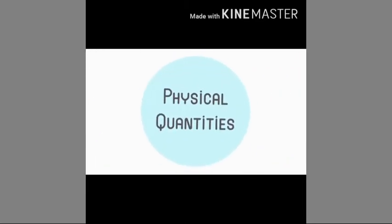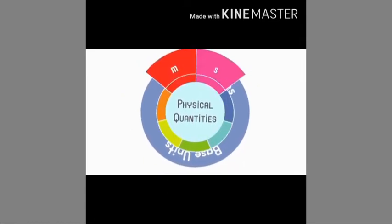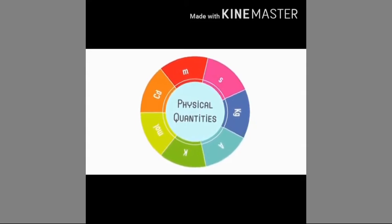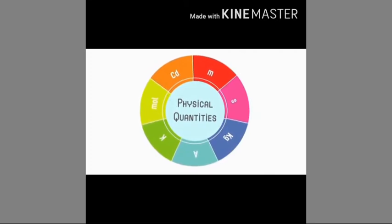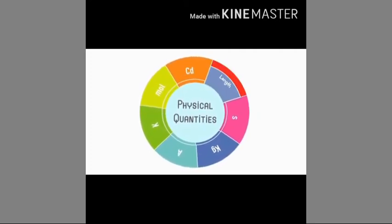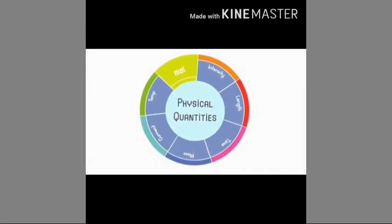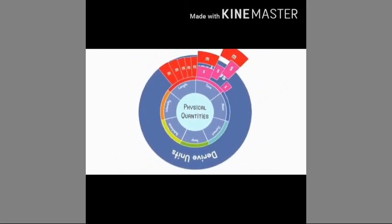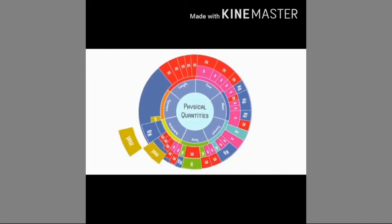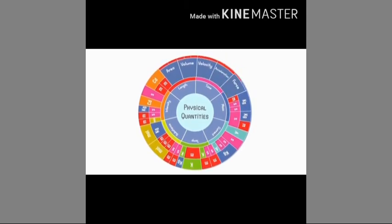Physical quantities are divided into two categories. Base quantities form the base or foundation of other physical quantities — these include length, mass, time, temperature, intensity of light, electric current, and amount of substance. Derived quantities are those expressed in terms of base quantities, and include area, volume, velocity, acceleration, force, and pressure.